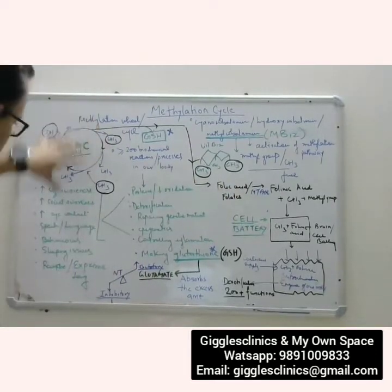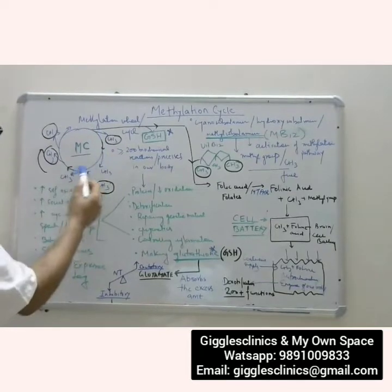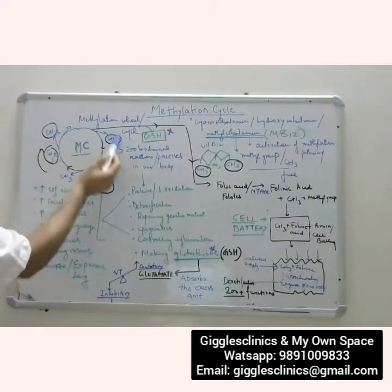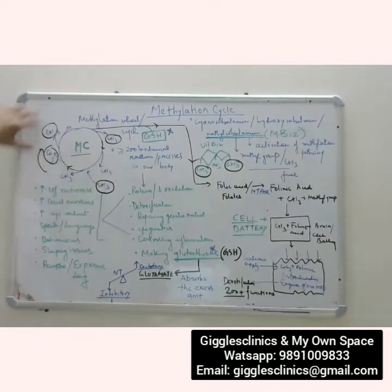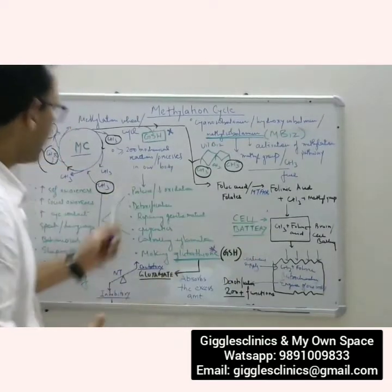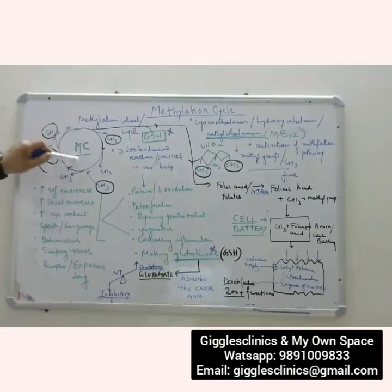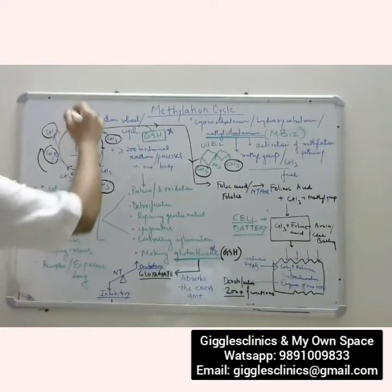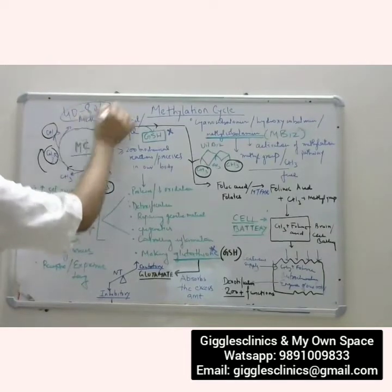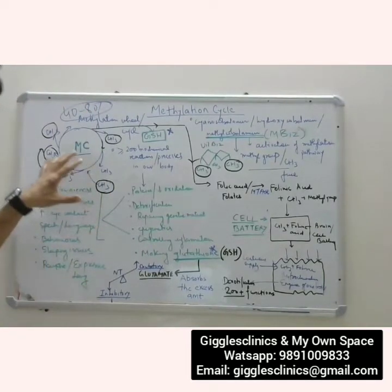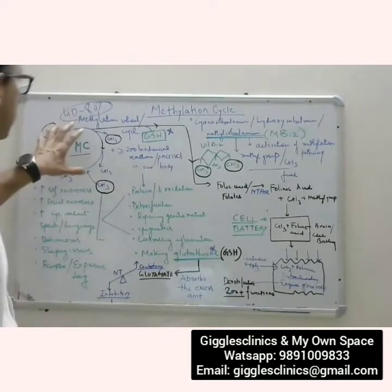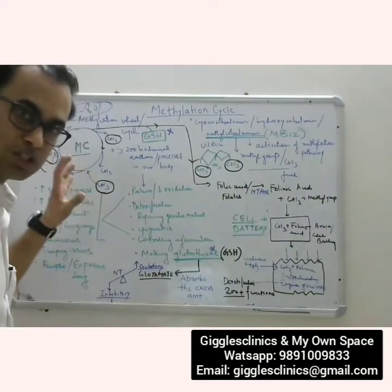Considering the methylation cycle as a wheel, it keeps on rotating and continuously dispersing these methyl groups to carry out various functions. It is considered that this cycle is deficient or inactive — not carrying out proper functions — in 40 to 80% of children who are on the spectrum. This is the basis of the biochemical phenomena occurring in these children.